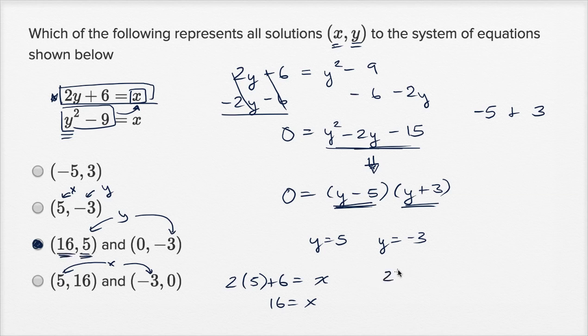And when y is negative 3, 2 times negative 3 plus 6 equals x. This on the left-hand side is going to be negative 6 plus 6, so x equals 0. When y is negative 3, x equals 0. So we took a little extra time to make sure that we feel good about this. But once again, under time pressure, I wouldn't have necessarily gone through to this extra length.